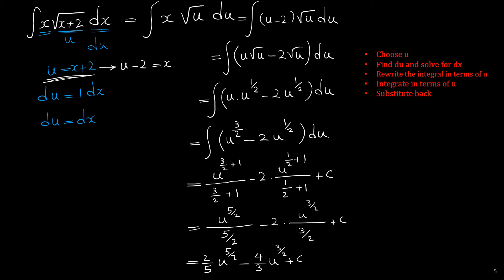Now we substitute back, replacing u with x + 2. Our final answer is 2/5 times (x + 2) to the power of 5 over 2 minus 4/3 times (x + 2) to the power of 3 over 2 plus c.